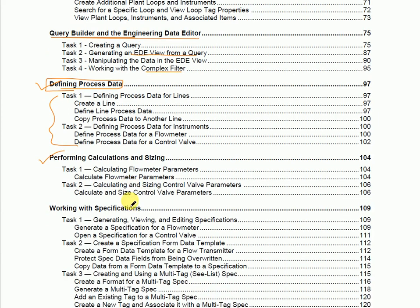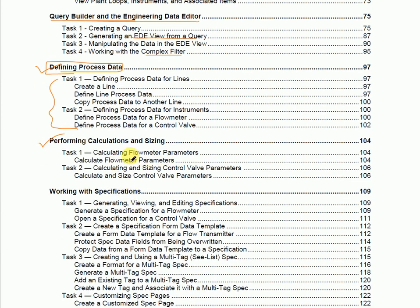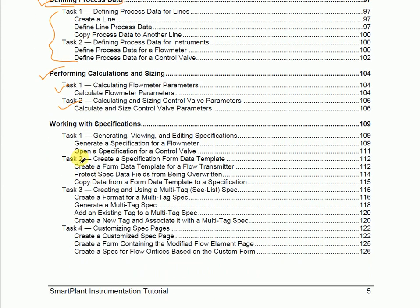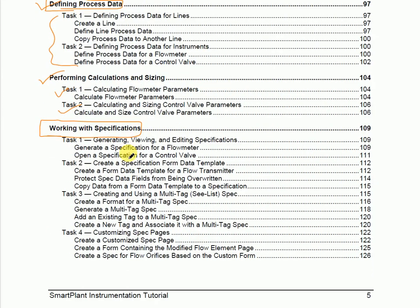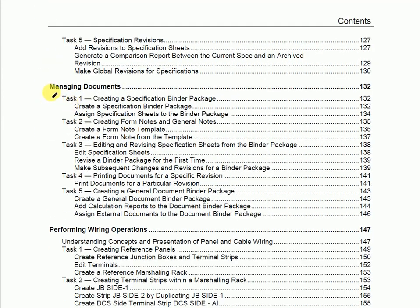The Calculation and Sizing module is also available. In this module we can calculate flow parameters and calculate control valve sizing through the calculation module of InTools. Working with the Specification module, you will be able to create all the data sheets — in InTools the specification is called a data sheet — so all instrument data sheets can be created from this specification module.